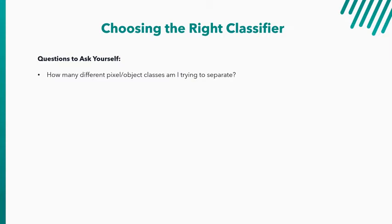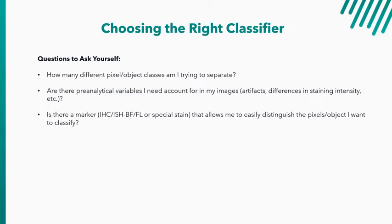Then, are there any pre-analytical variables I need to account for in my image? Are there artifacts, bubbles, or differences in focus? Are there differences in staining intensities? Are there differences in disease states in these images? I just want to point out that these are very critical in choosing a classifier and how to handle that pre-analytical variability. Is there a marker? Is there an IHC or ISH stain? Is it bright field or fluorescence? Is there a special stain? Something that allows me to easily distinguish the pixels or objects that I may want to classify? Or is the analysis relying on the morphology of an object? Is it the shape or texture that is the only thing that distinguishes it from a certain compartment or an object from everything around it?